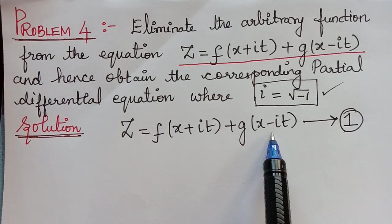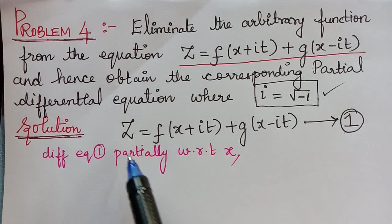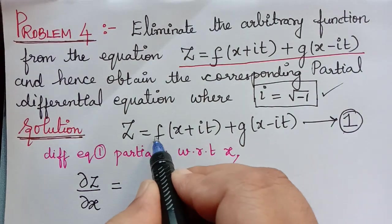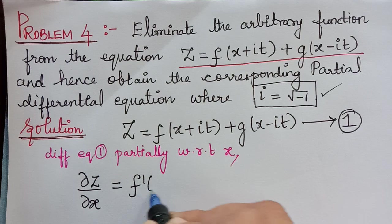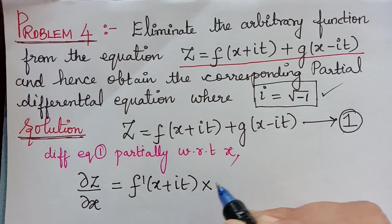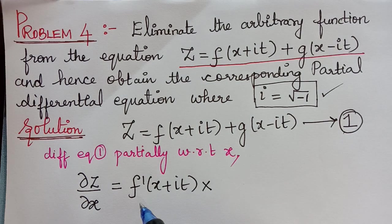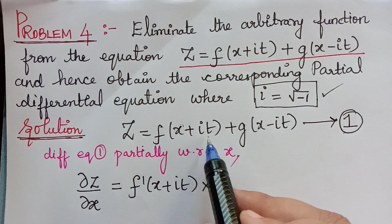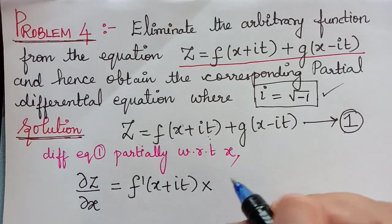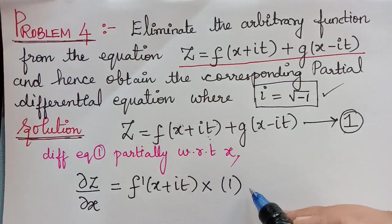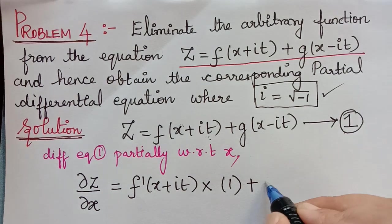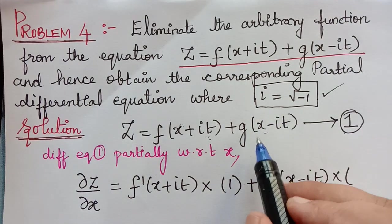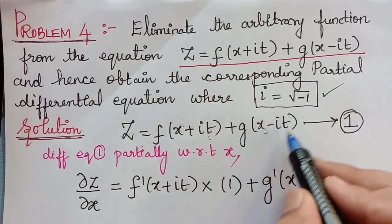Now we have to differentiate equation 1 partially with respect to x. When we do so, we obtain dou z by dou x equal to the differentiation of f(x + it), which is f'(x + it) multiplied with the differentiation of x, which is 1, since t is treated as constant and its differentiation is 0. Similarly, the differentiation of g(x - it) is g'(x - it) multiplied with 1.